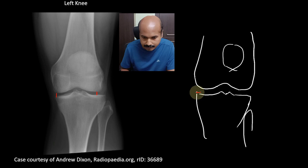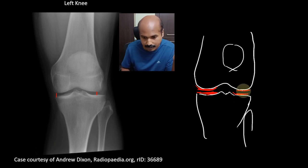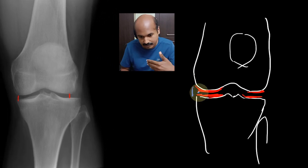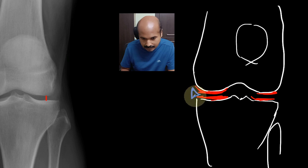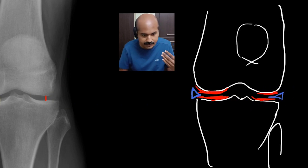Between these two bony surfaces, you actually have articular cartilage. Whenever two bony surfaces meet at a joint, you have articular cartilage. We also know that in the knee there is the meniscus. Drawing a coronal section, the meniscus appears like a triangle — this is the base region of the meniscus, and these are the articular surfaces. You have a similar meniscus on the other side as well.